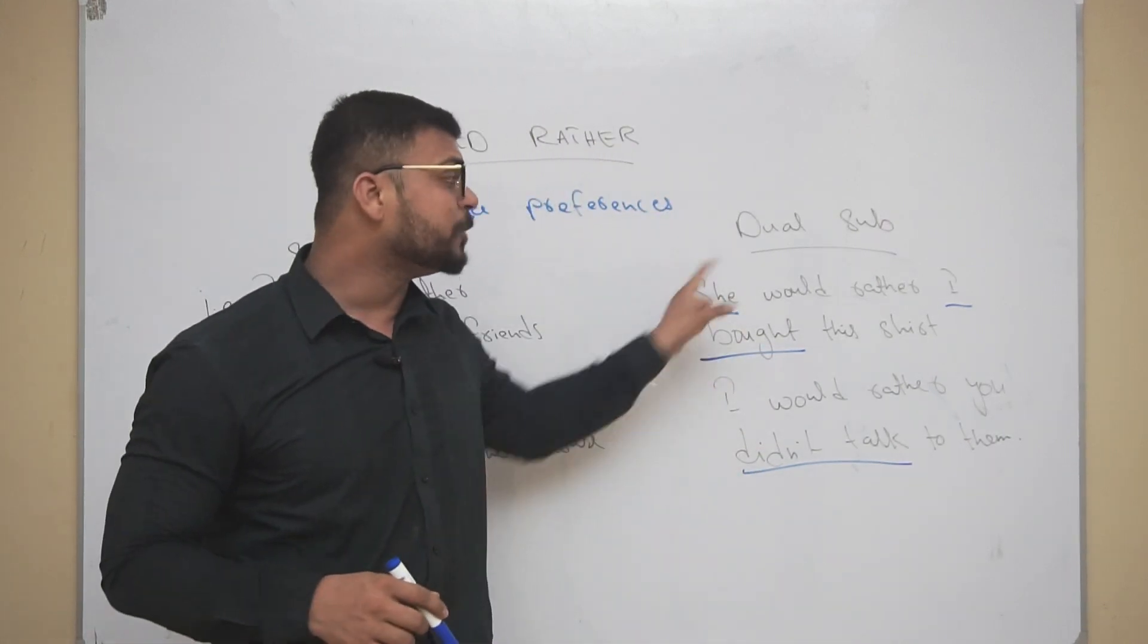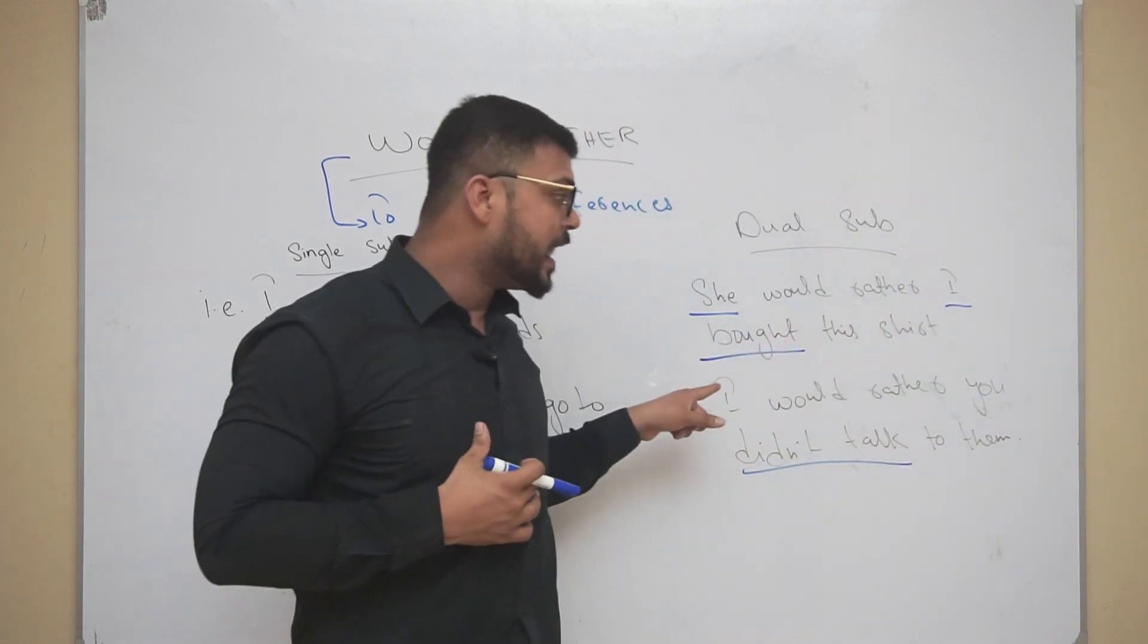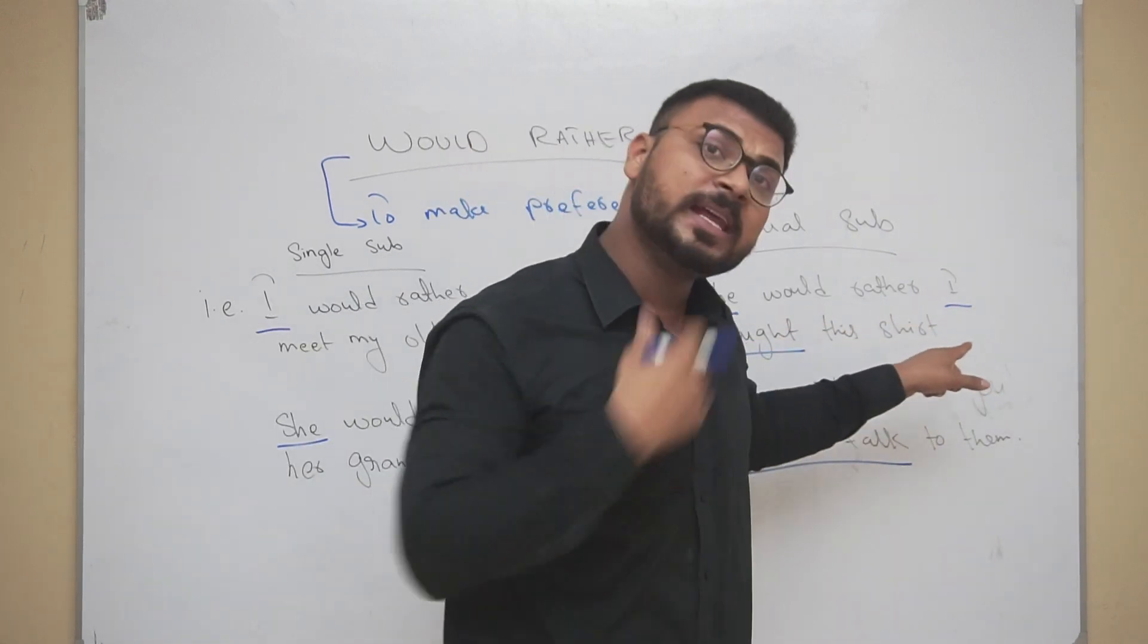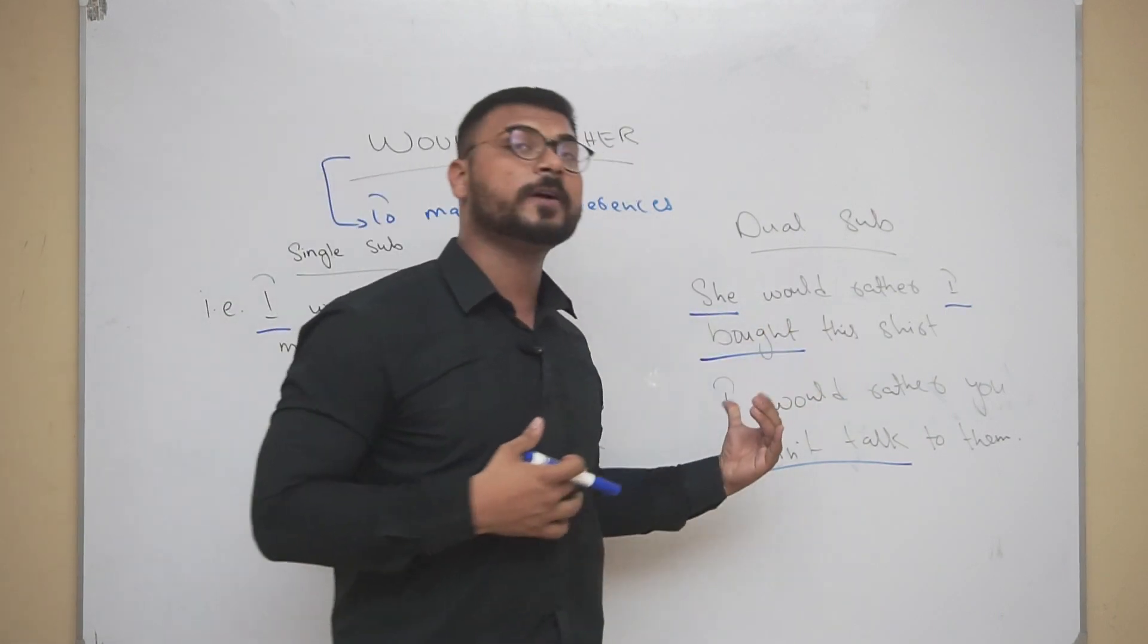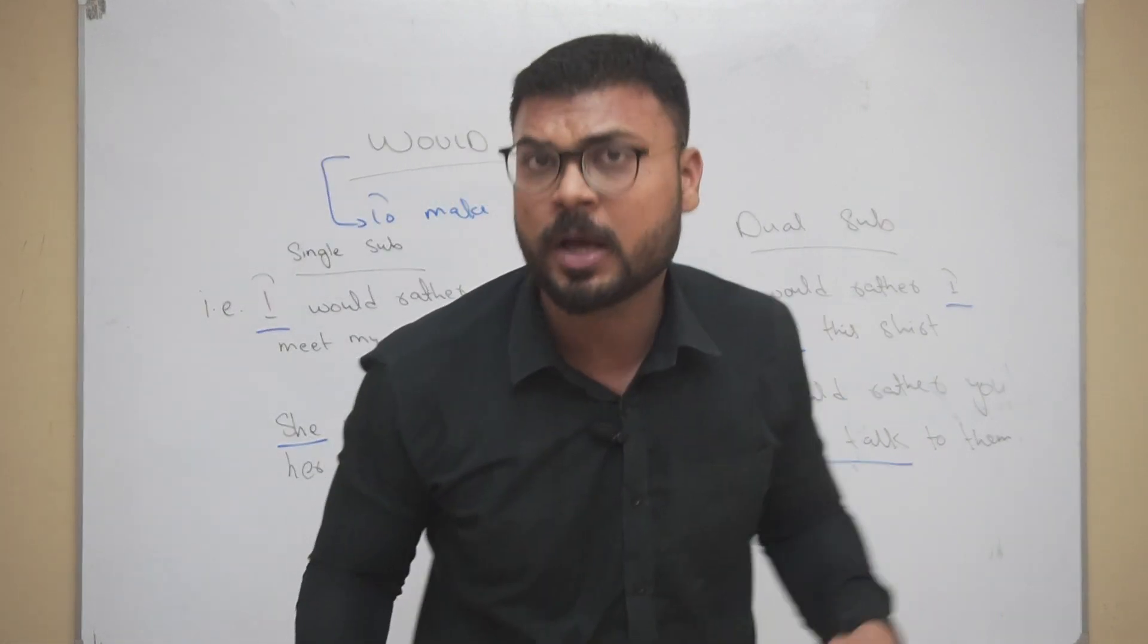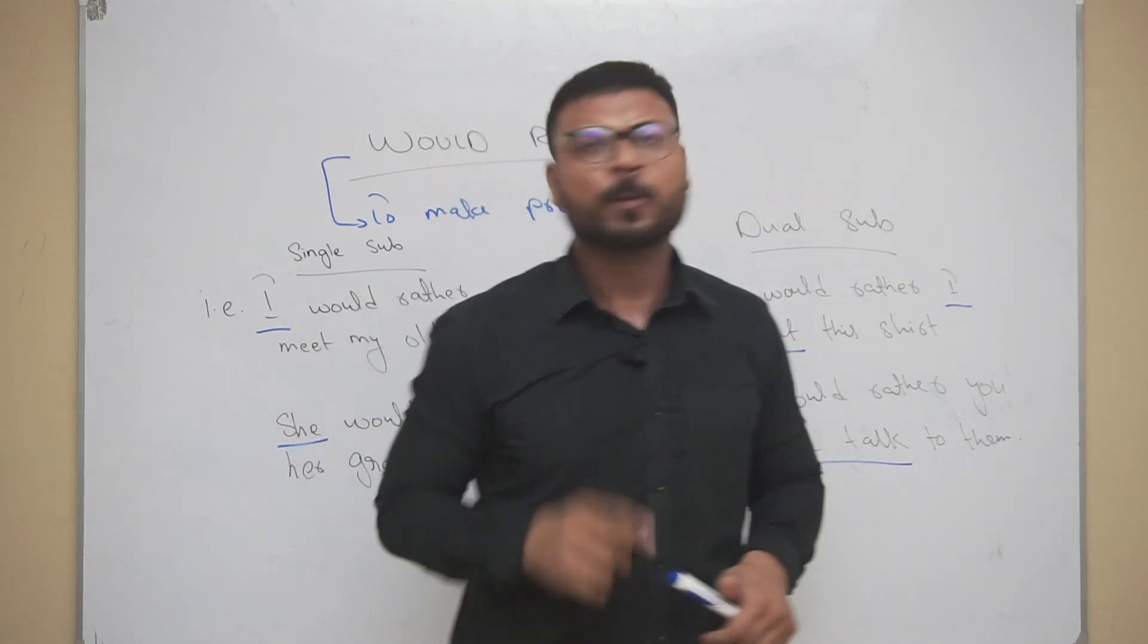You see I have used here the past form, the second form, and 'did', the helping verb of past simple tense. So here she is saying: she would rather I bought this shirt. This means that she prefers for me to buy this shirt than any other shirt.